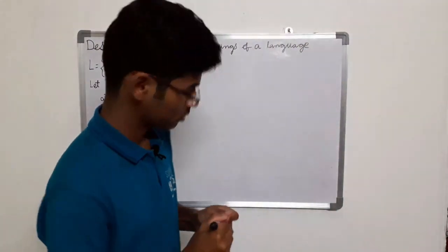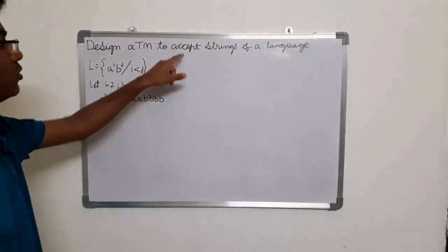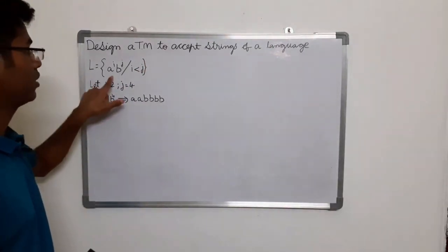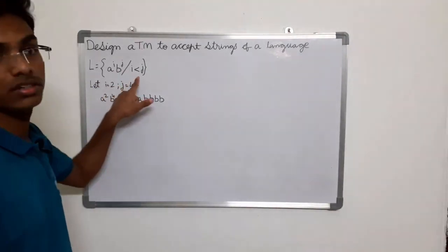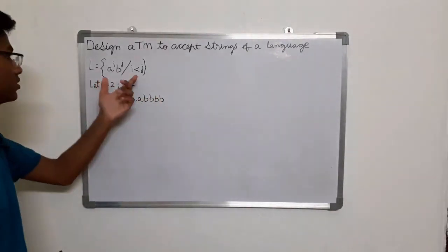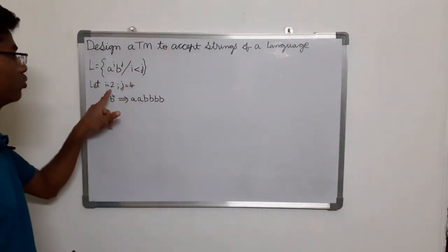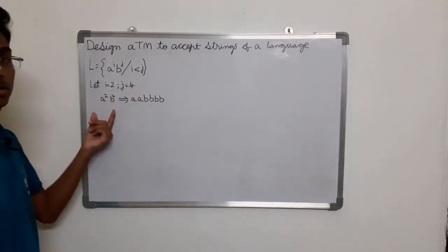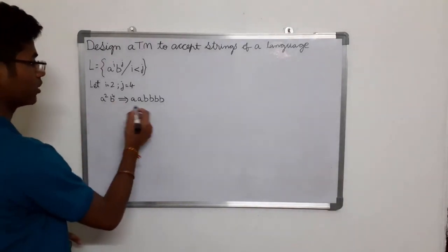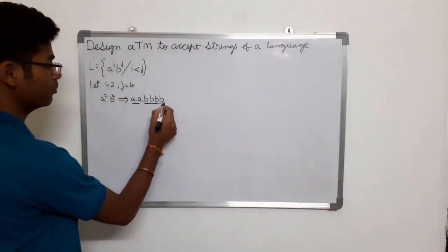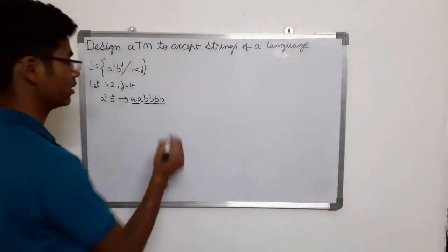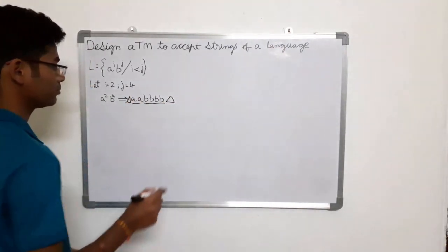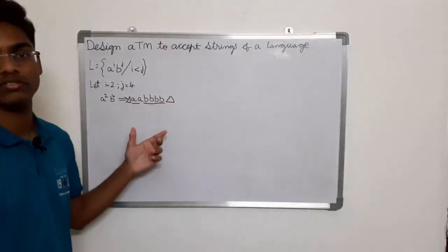Let's solve this question: design a Turing machine to accept strings of a language where the language is defined as a^i × b^j where i is less than j. Let's consider the values of i to be 2 and j equals 4, so the string becomes a^2 × b^4, which can also be written as 'a a b b b b'. We can add delta (blank symbol) at the end and at the start. Now in order to draw a Turing machine for this, let me write a logic.